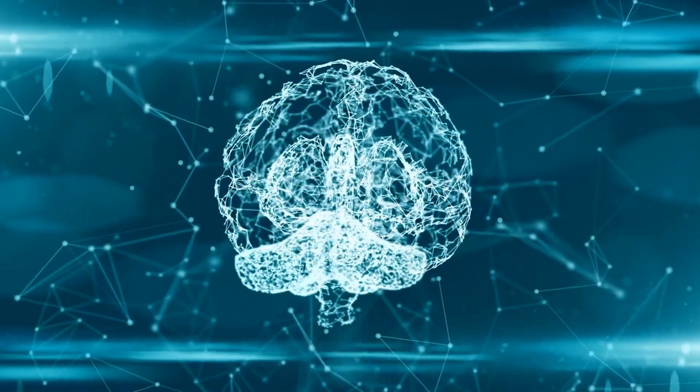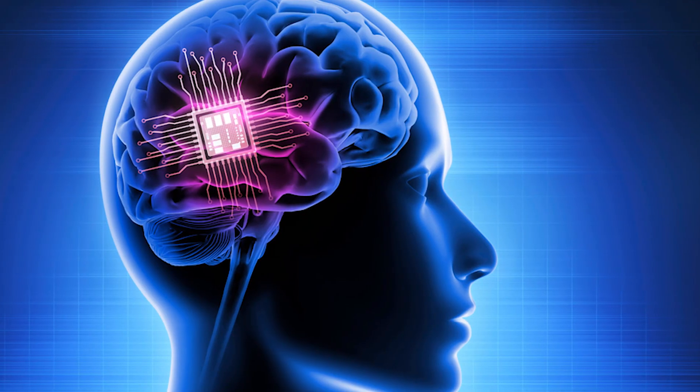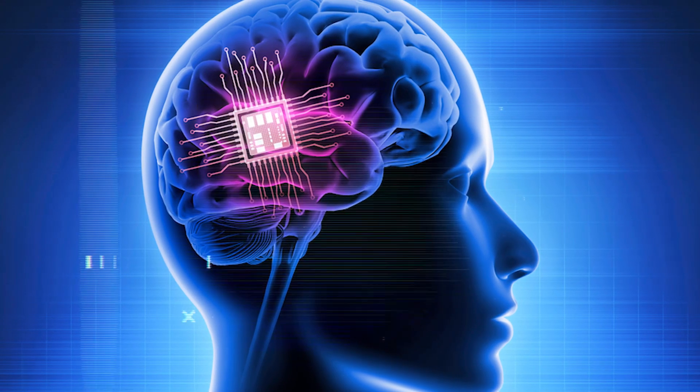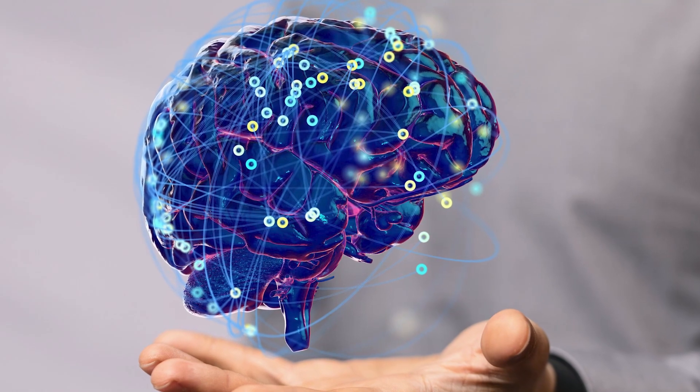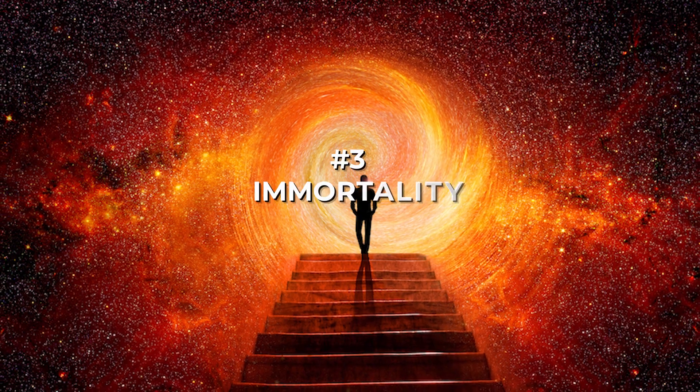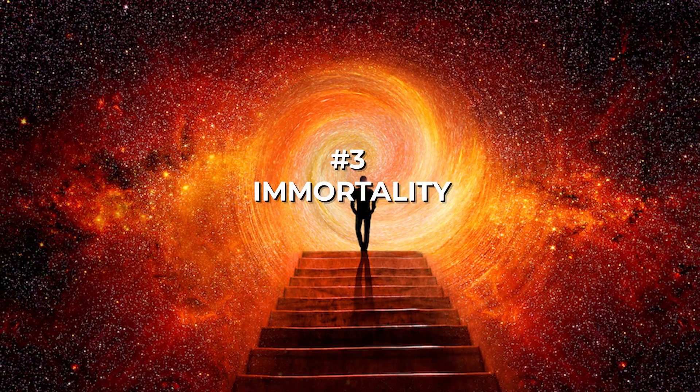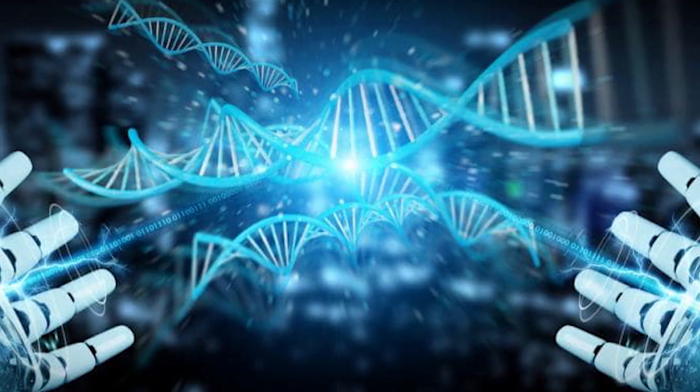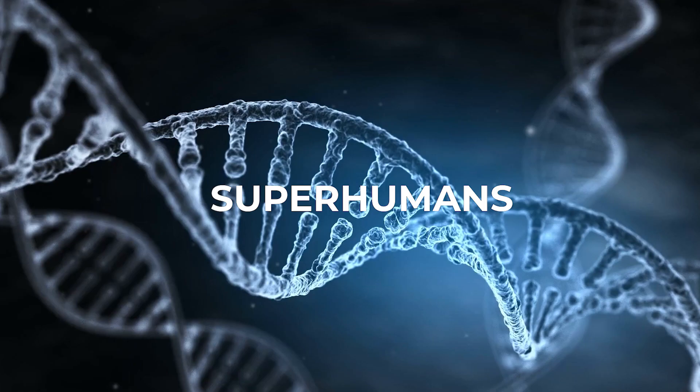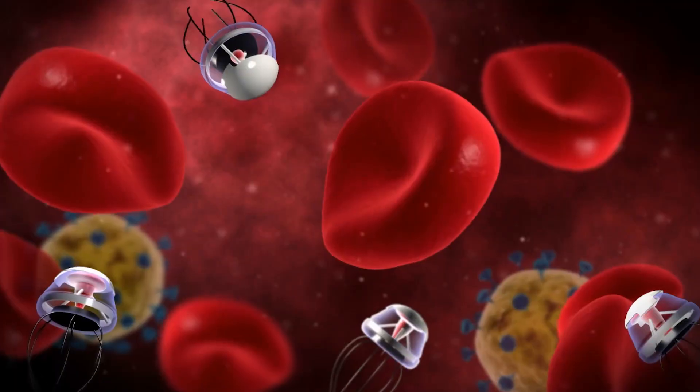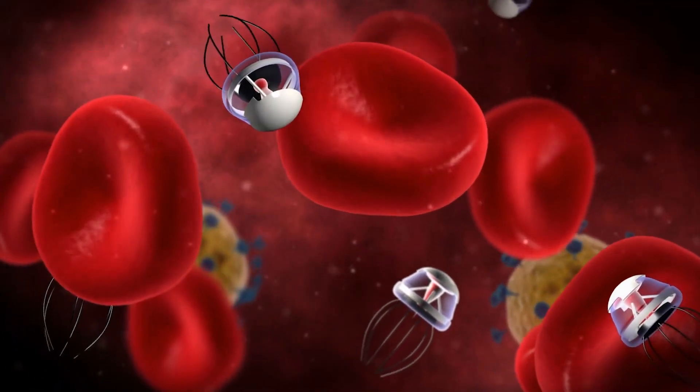This will only get worse as we construct synthetic brains capable of considerably faster processing speeds and larger amounts of memory than our biological brains. Number 3. Immortality. If we are fortunate enough to survive the singularity, we may develop a new species of immortal superhumans. A combination of genetic engineering and nanobots could significantly reduce aging.